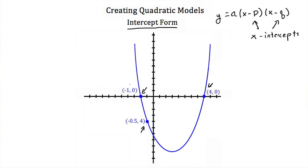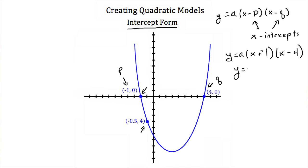So if we have x-intercepts of negative 1 and 4, I can plug negative 1 in for p and 4 in for q. So if I do that, I have y is equal to a times x minus negative 1 times x minus 4. Well x minus negative 1 is just x plus 1, so this is y is equal to a times x plus 1 times x minus 4. Now again we still have this a, so we're going to use the other point that we're given, plug that in for x and y, and then we'll solve for a.